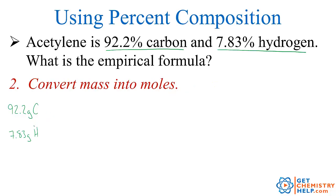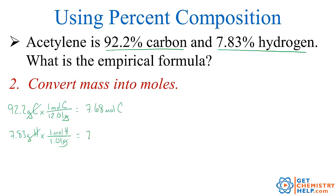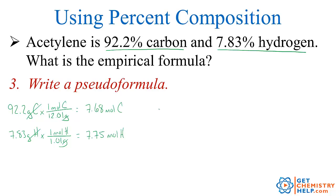I want the mole-to-mole ratio, not the mass-to-mass ratio. So I convert mass to moles using molar mass. Carbon's molar mass is 12.01 grams per mole; hydrogen's is 1.01 grams per mole. That gives me 7.68 moles of carbon and 7.75 moles of hydrogen. The next step is to write a pseudo-formula: C 7.68, H 7.75.